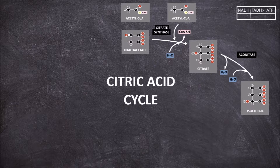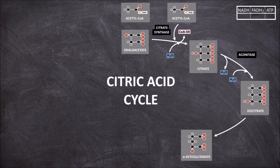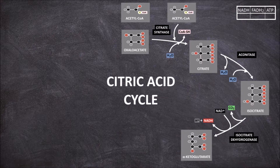The third step involves the decarboxylation and oxidation of isocitrate, a six-carbon molecule, into alpha-ketoglutarate, a five-carbon molecule, using the enzyme isocitrate dehydrogenase. A carbon dioxide molecule is removed, and NAD+ is reduced to NADH. This gives us one NADH, for a net total so far of one NADH per acetyl-CoA molecule.